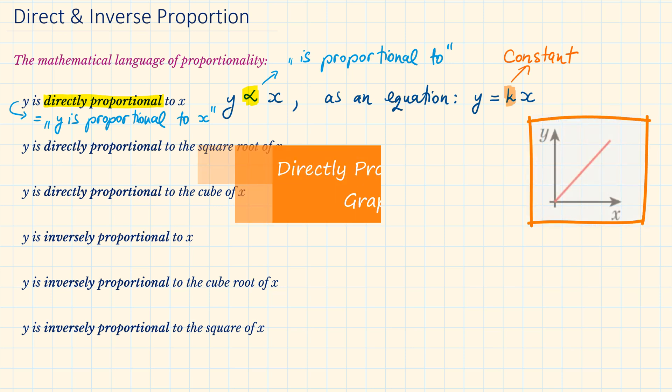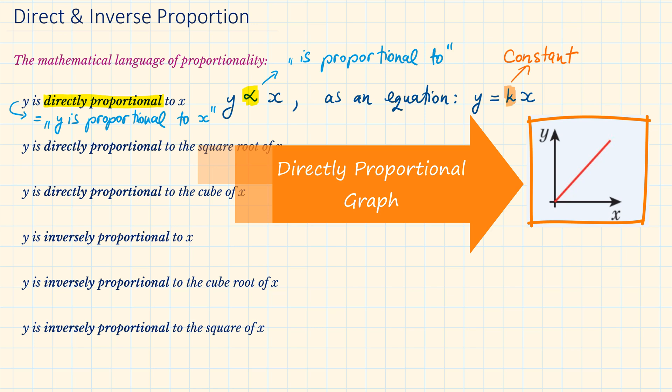A directly proportional graph is a straight line going through (0, 0), and the steepness is determined by the constant K. As you can see on the graph, as one quantity increases the other one also increases, or as one decreases the other one also decreases.